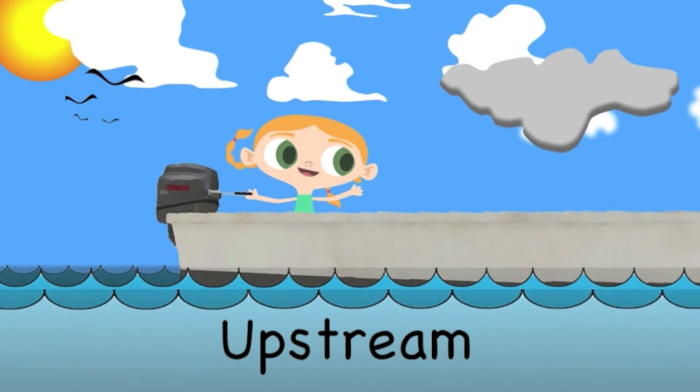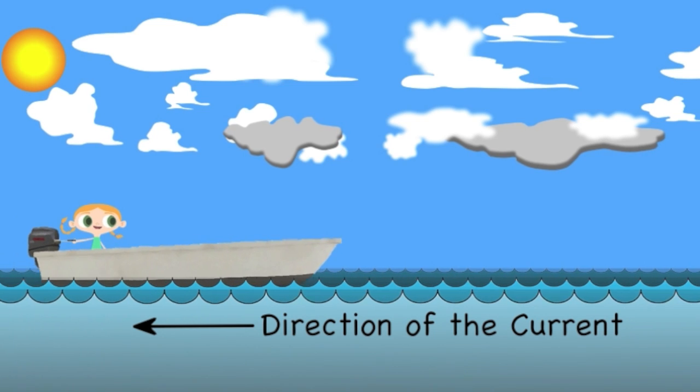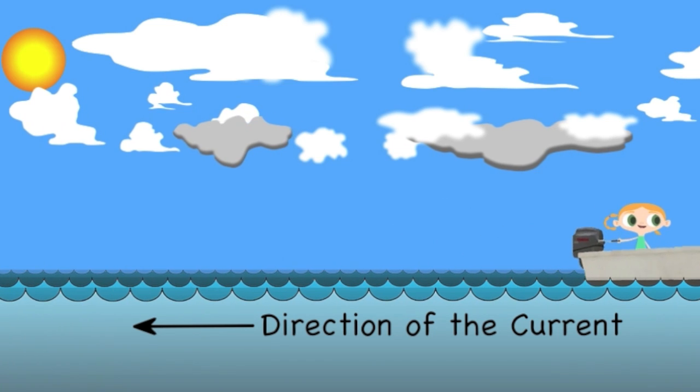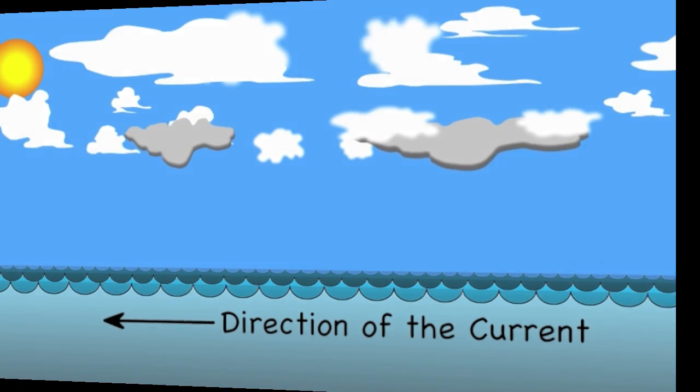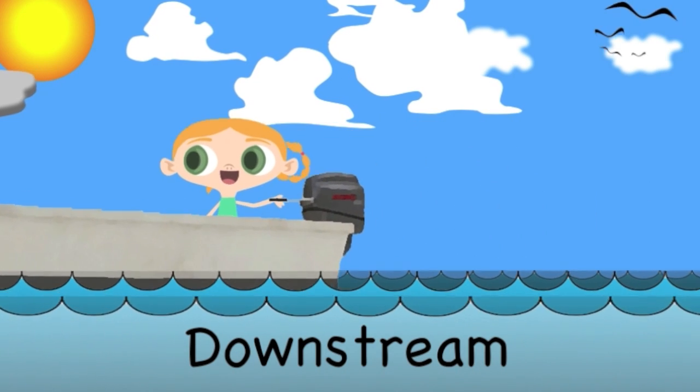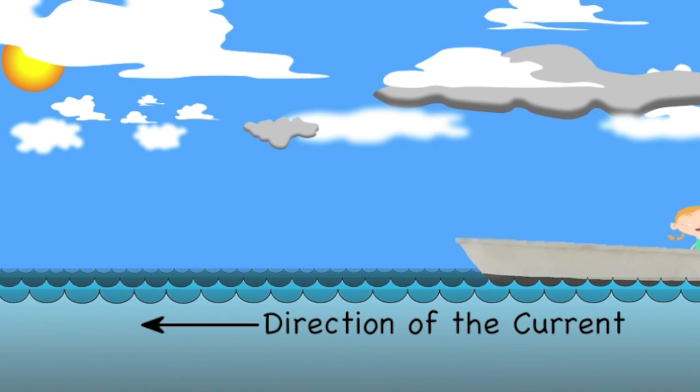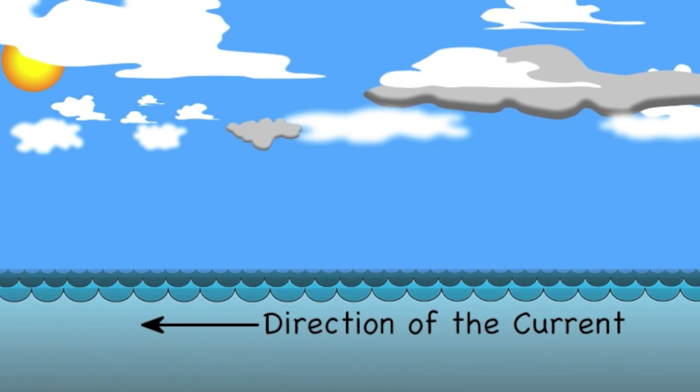When a boat is going upstream, it moves directly against the water. Its speed in still water would be decreased by the current. The opposite is true when a boat is going downstream—it moves directly with the water. Its speed in still water would be increased by the current.